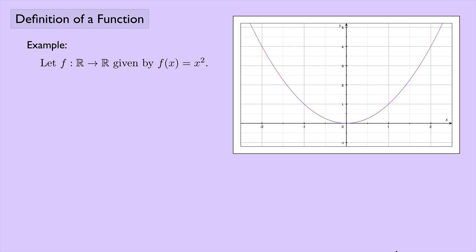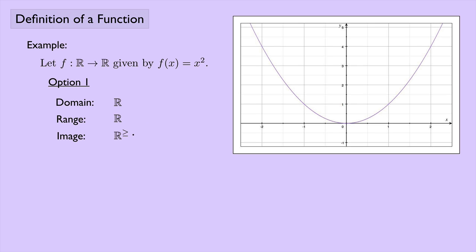You've probably heard these words before, but it can be tricky to actually define them. Different textbooks use different conventions, so we have to stick with one. Let's look at some options. Option one: the domain of this function is all real numbers, the range is also all real numbers, and the image is all real numbers greater than or equal to zero — that part of the y-axis that has something mapped to it.